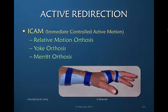The use of the ICAM splint — which stands for Immediate Controlled Active Motion — was developed for extensor tendon injuries. This orthosis goes by many names: it's often called the relative motion splint, the yoke splint, or the merit orthosis. It is intended to position one metacarpophalangeal joint in a different position relative to the adjacent joints in order to take stress off the healing tendon. We can use the same splinting technique for active redirection — the purpose being not so much to relatively position the MP joint, but to control its position: in other words, not to let it hyperextend or hyperflex.